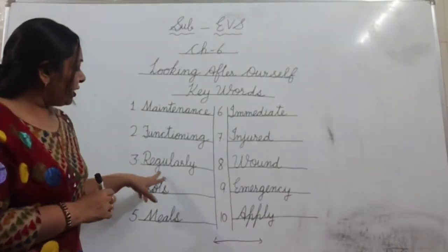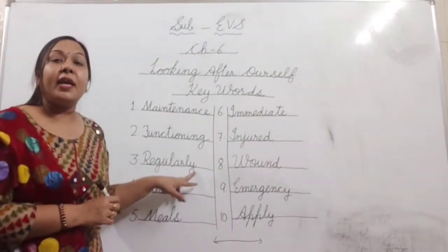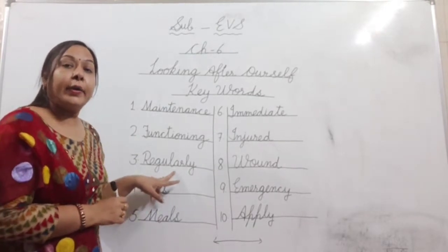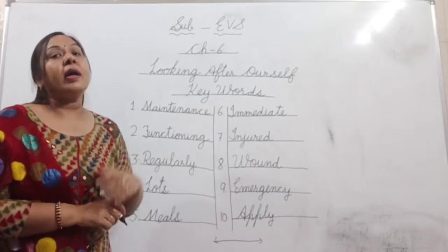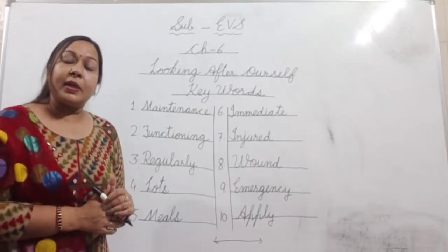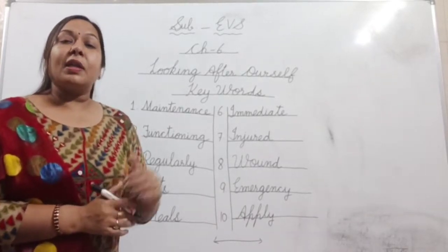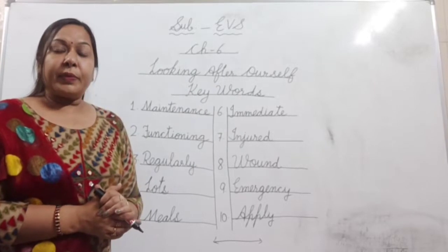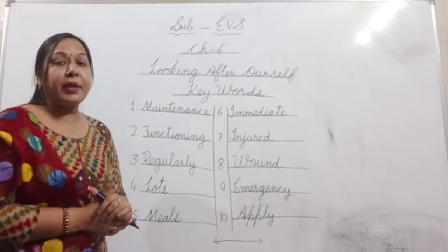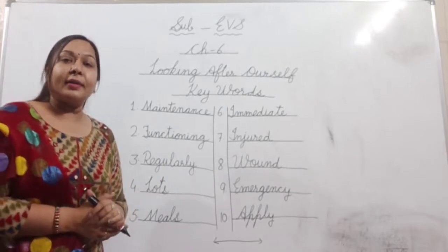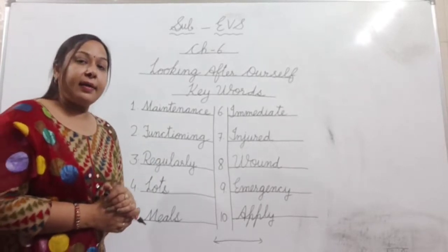Number three: r-e-g-u-l-a-r-l-y — regularly. Regularly means usually or habitually. Regularly ka matlab hota hai usually or habitually, matlab niyam tawar par. Jaise humne isko sentence mein book mein padha ki we should take bath regularly. Hummye nirmit tawar par nahana chahiye.